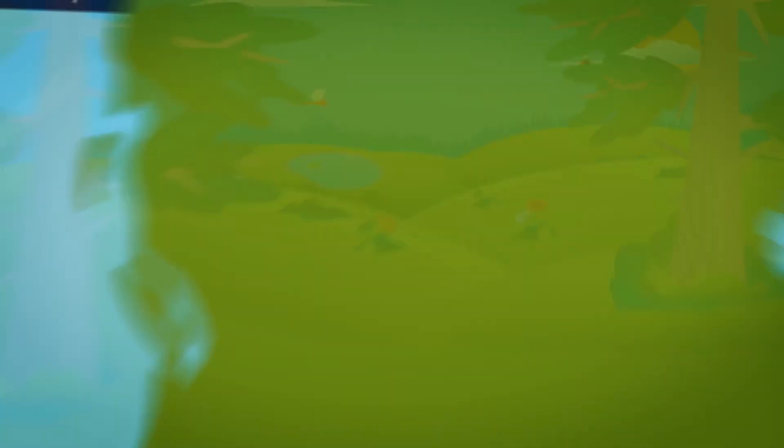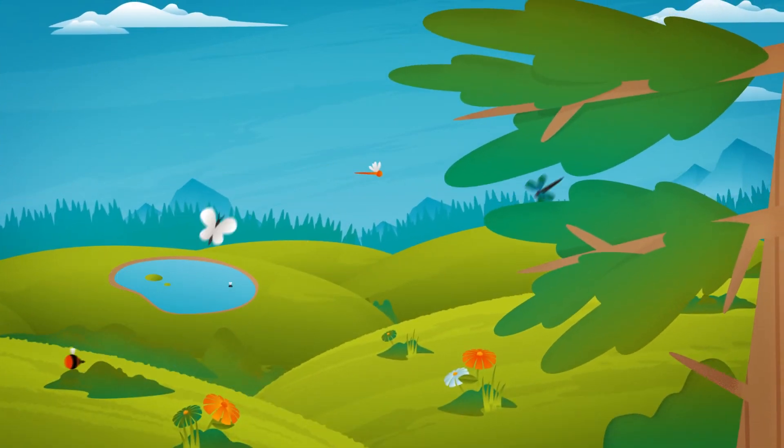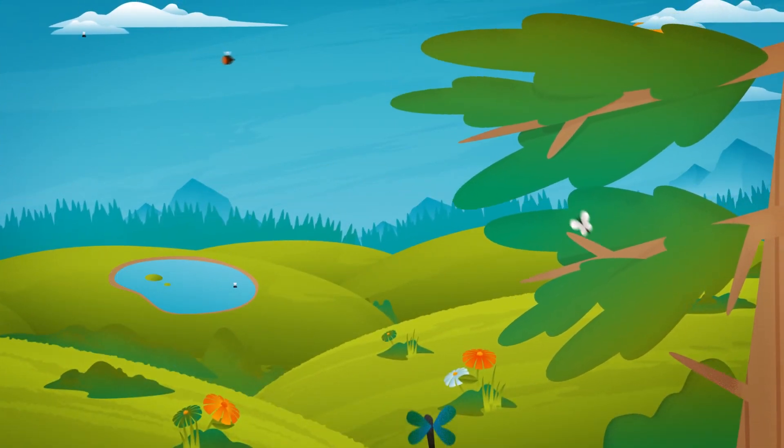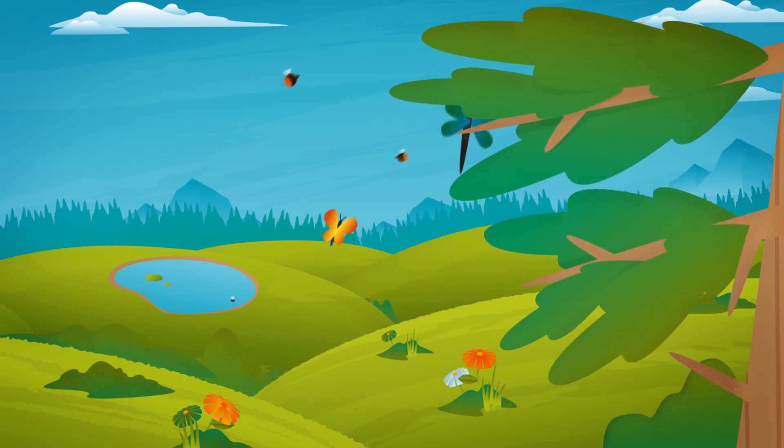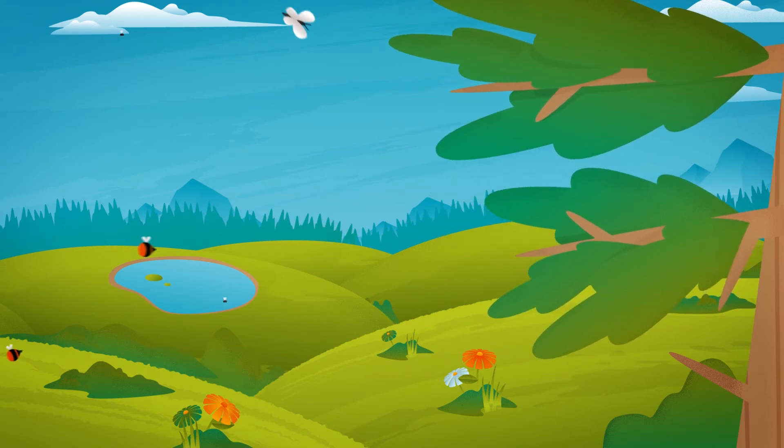Syngenta has already enhanced biodiversity on more than 5 million hectares of farmland and continues helping growers put more food and habitat for pollinators back into the farming landscape.